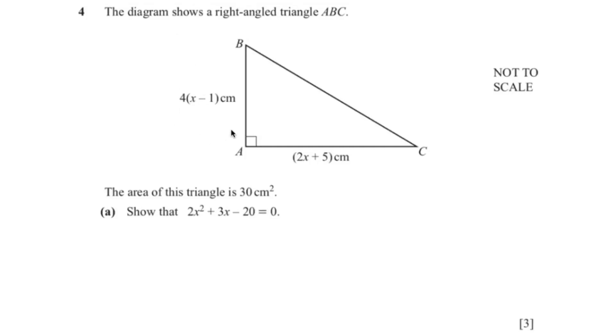This first question has given us the length of the triangle and the area. We know that 1 over 2 base times height is the formula for the area of a triangle, and they want us to show that 2x squared plus 3x minus 20 equals 0.